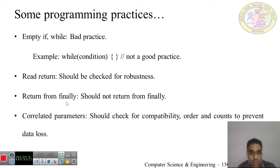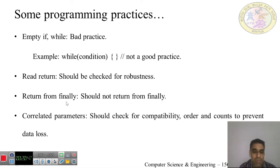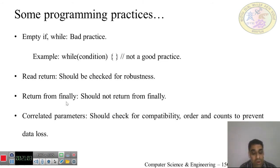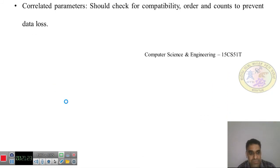The next practice involves correlated parameters — parameters that have some sort of relation or link to each other. Correlated parameters should be checked for compatibility, order, and count. We know about actual arguments and formal arguments, so we must take care of data type compatibility, the order of parameters being passed, and the count — because if we don't, data may get lost. Correlated parameters must be checked to prevent data loss.